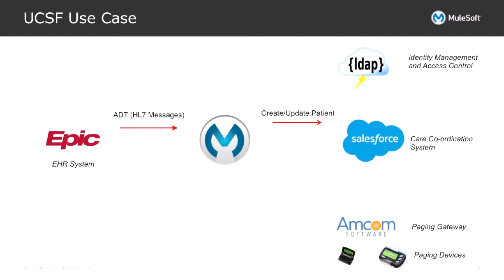The second use case is about getting the list of users from EPIC and updating corresponding users in Salesforce based on their status of active or inactive, which dictates their access to Salesforce. This is triggered from EPIC when users are activated or inactivated. This real-time integration messaging ensures that as access levels of users are changed in EPIC, that is reflected accurately and in real-time in their Salesforce access levels as well.